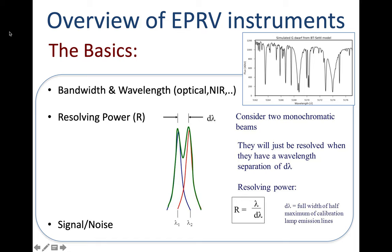You also need to consider the signal-to-noise ratio. Photon noise will always be a limitation, so we want to make our instruments very efficient and put them on the biggest telescopes available.